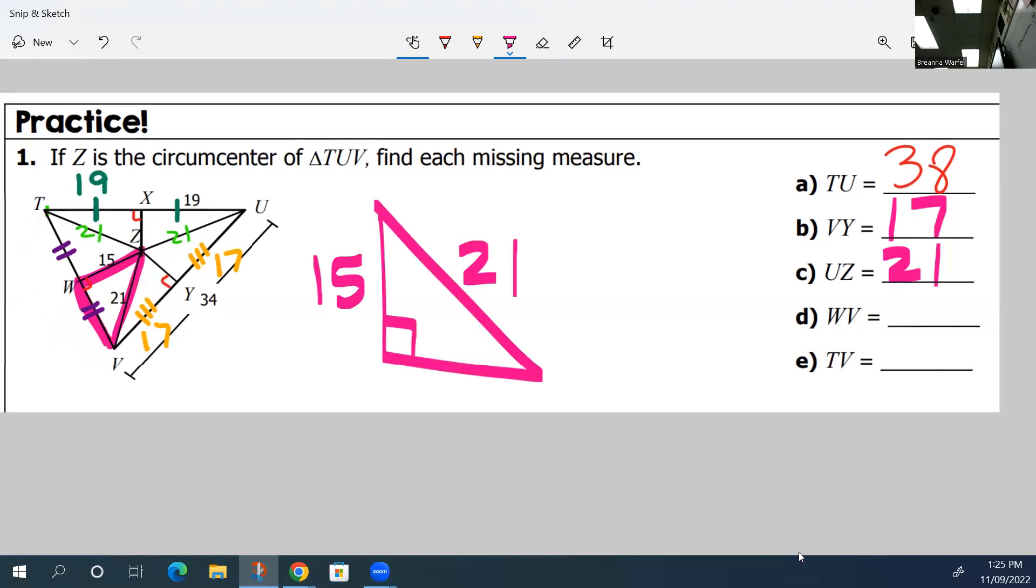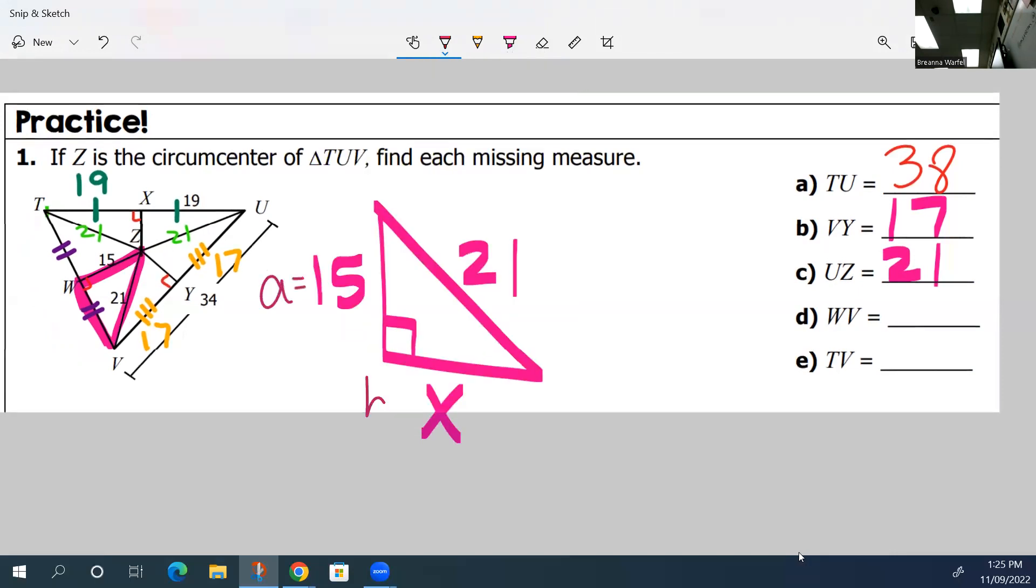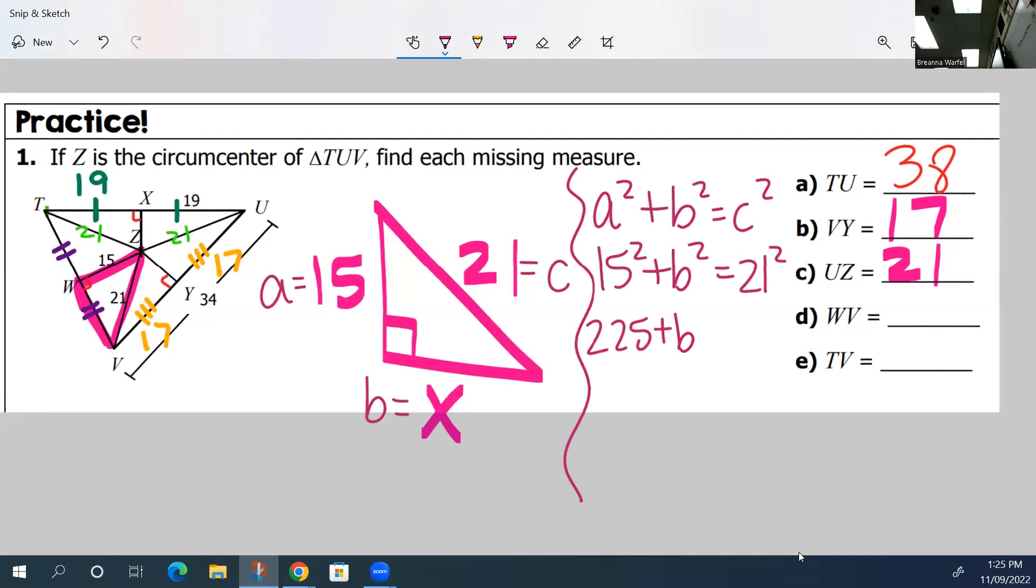So we can solve for the third side because you guys know Pythagorean theorem. I'm going to say my side is A, the bottom is B, my hypotenuse is C. Then I use my Pythagorean theorem to solve for my missing pieces. If A is 19 squared plus B squared equals 21 squared, then you can square those values. 19 squared is 361. Wait, 15 squared is 225 plus B squared equals 21 squared, which is 441.